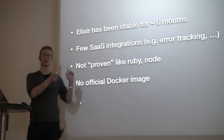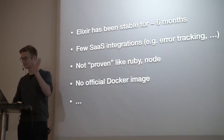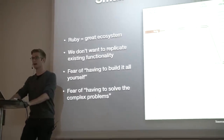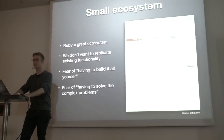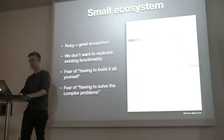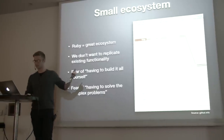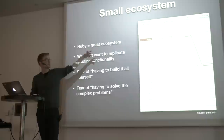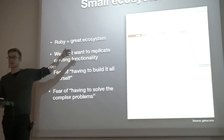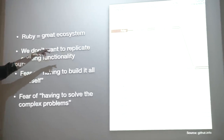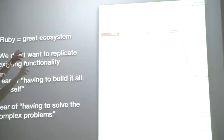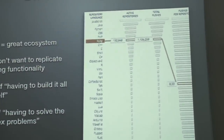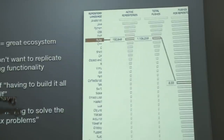Small ecosystem. I have a Ruby background. There's a chart showing all the different GitHub repos and how active they are — Ruby is up there, JavaScript is very tall. There are a lot of repositories and a lot going on. Obviously, Elixir is not on that list yet for a younger language, but I do think that's going to change.